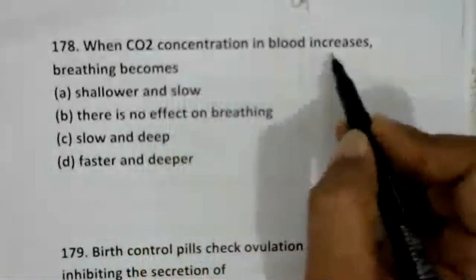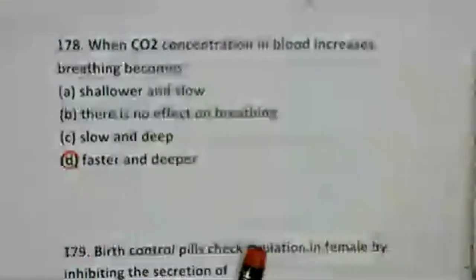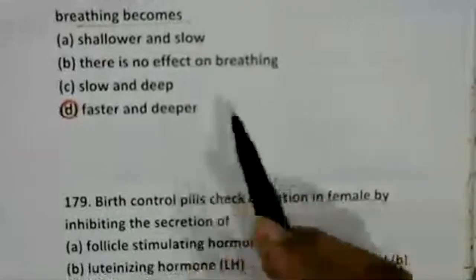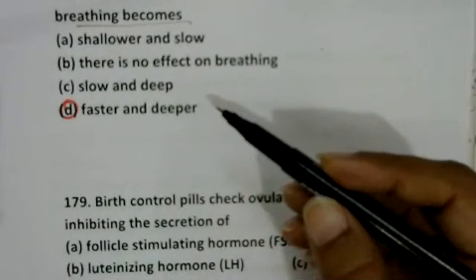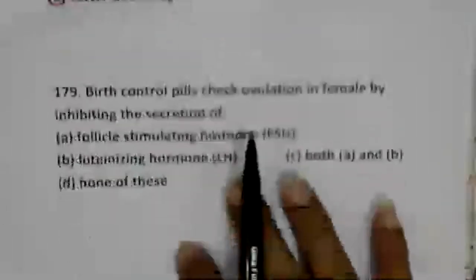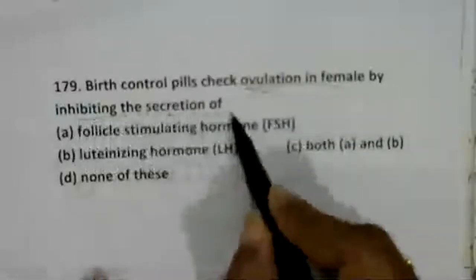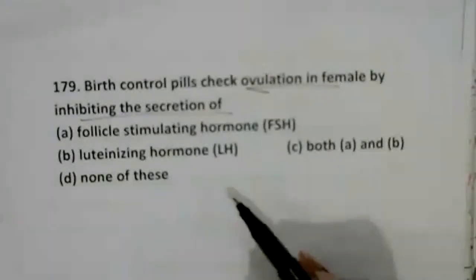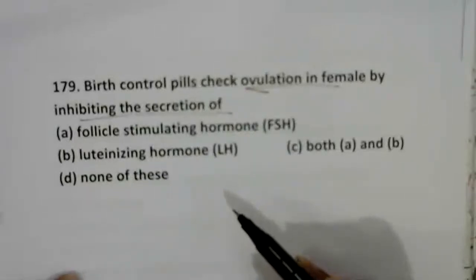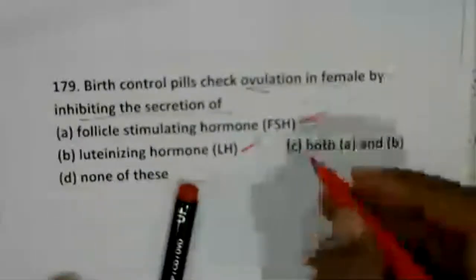When carbon dioxide concentration in blood increases, breathing becomes faster and deeper. When oxygen concentration is more and CO2 is less, breathing becomes shallower and slow. Birth control pills check ovulation in females by inhibiting the secretion of both FSH and LH hormones — option three.